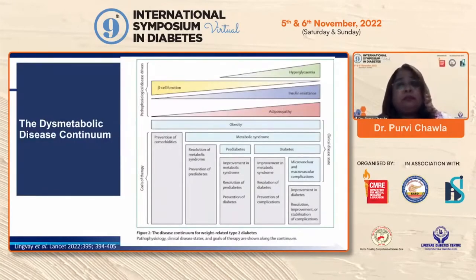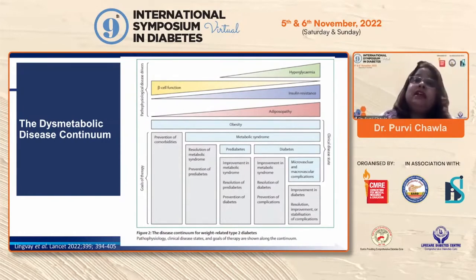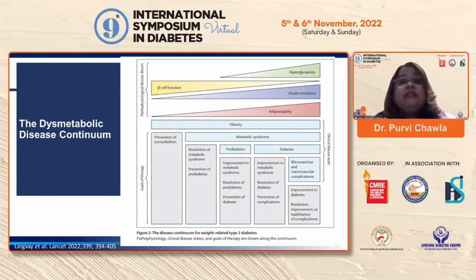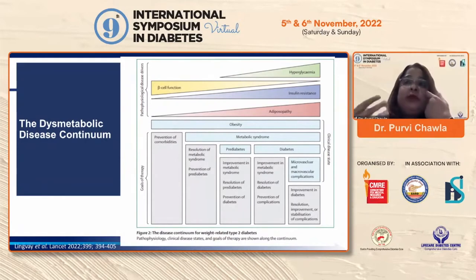Looking at the top panel, it clearly shows that increase in adiposopathy is associated with increasing insulin resistance and hyperglycemia in tandem, and a reduction of beta cell function. Looking at the continuum of obesity, you can see that obesity is the origin of everything — metabolic syndrome, pre-diabetes, and diabetes all manifest at some point in the continuum, but obesity is there in the background throughout.